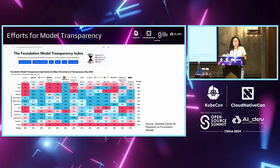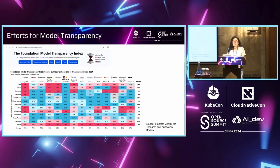Here is an example from Stanford University — they have a program called the Center for Research on Foundation Models, in which they developed the Foundation Model Transparency Index. They evaluated over a dozen top foundation models and scored them against over 100 indicators to show how transparent they are. Transparency is actually different from openness — basically it's about whether the information is available, provided by model producers voluntarily, and then the program scores them based on the indicators. As you can see, there's no foundation model that's 100% transparent, so there's still room for improvement.